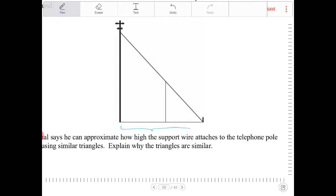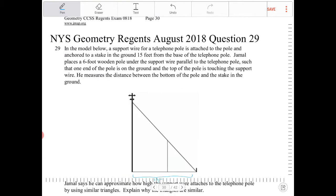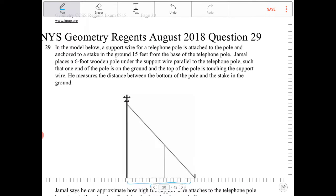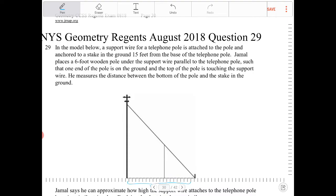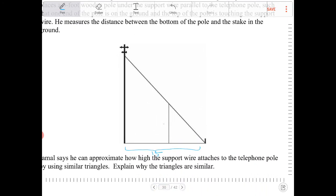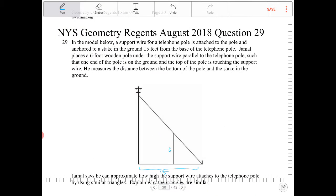What other information does this give us? Jamal places a six-foot wooden pole under the support wire parallel to the telephone pole such that one end of the pole is on the ground and the top of the pole is touching the support wire. So this is going to be six feet.